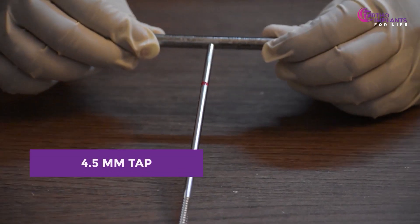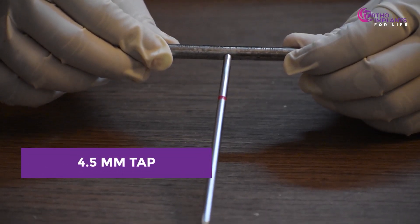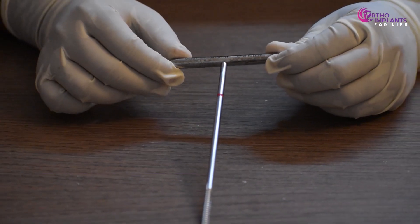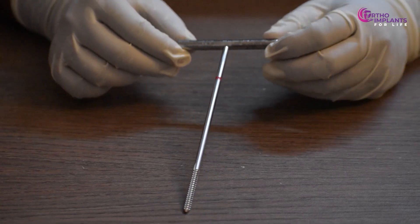Finally, we have the 4.5 mm tap, which is used for the 4.5 mm vertical plate. That's all for that is used for periprosthetic implants and instruments.